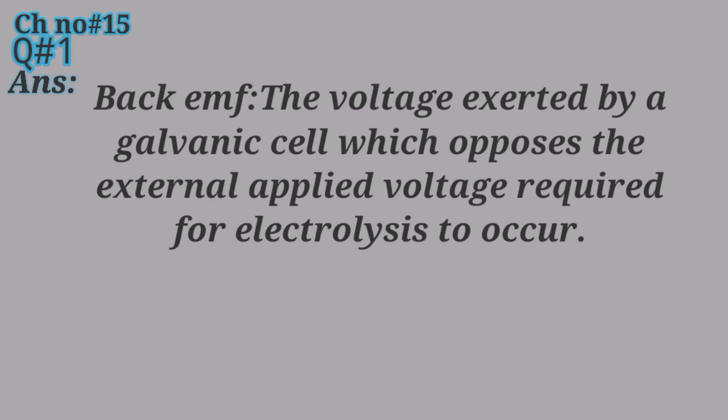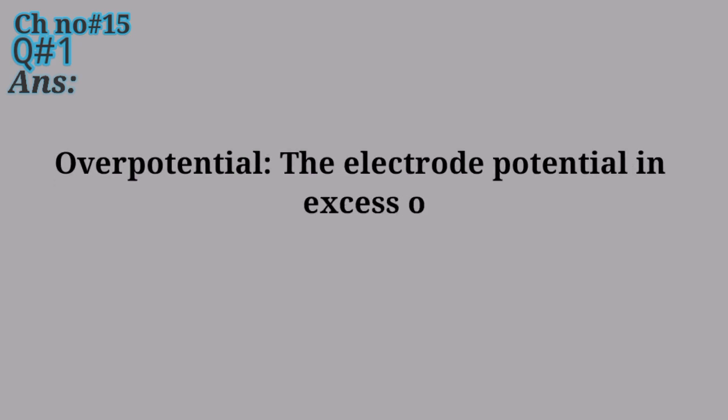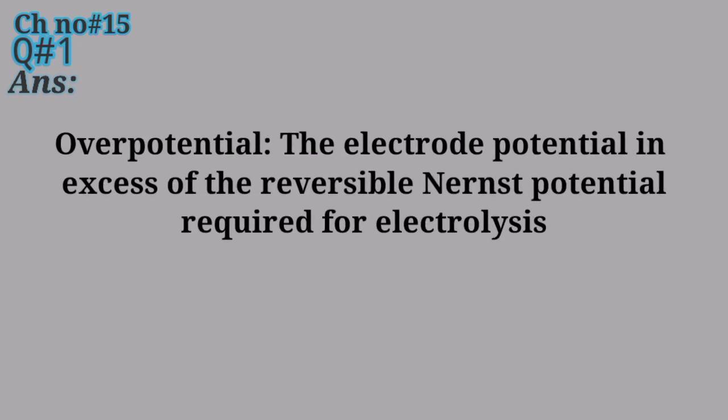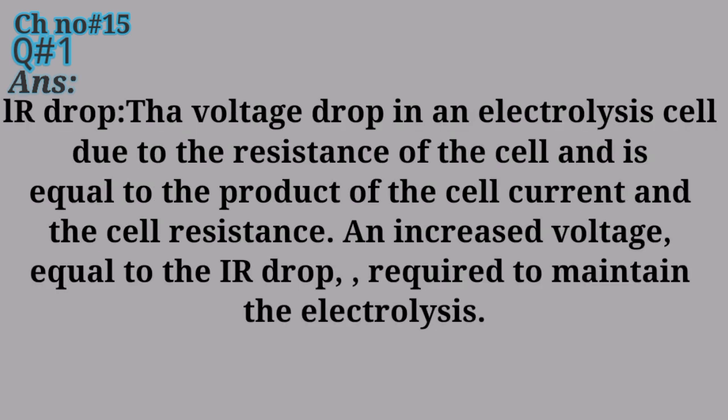Over Potential is defined as the electrode potential in excess of the reversible Nernst potential required for electrolysis to occur. IR Drop is defined as the voltage drop in an electrolysis cell due to the resistance of the cell.